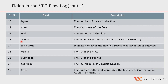Rejected means the traffic was denied. Next you have log status — the logging status of the flow log — meaning data is logging normally to the chosen destination. No data means there was no traffic recorded to or from the network interface during the capture window. Then we have VPC ID and subnet ID, indicating the VPC and subnet to which the traffic belongs. TCP flags are the header indicating the status of the log. And finally we have type, indicating the type of traffic that generated the log record, which can be accepted or rejected.